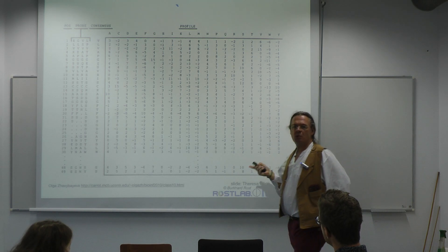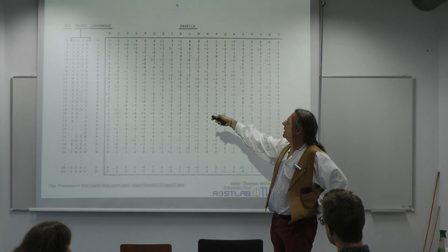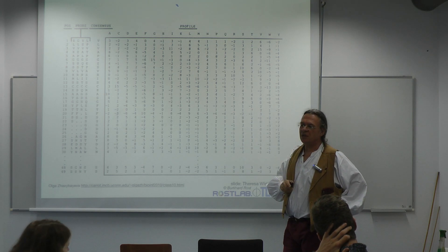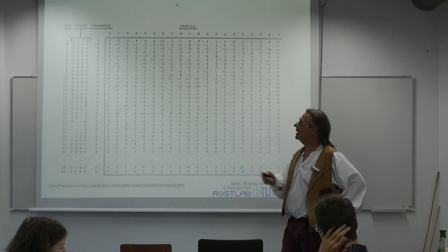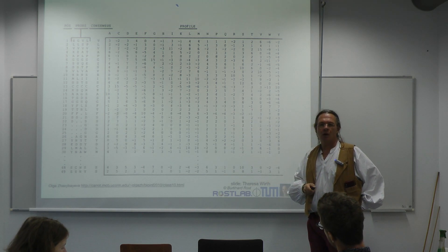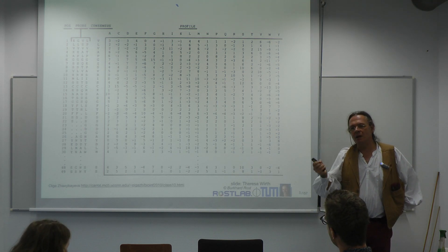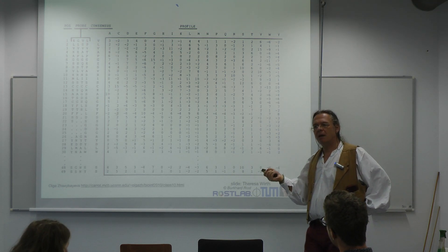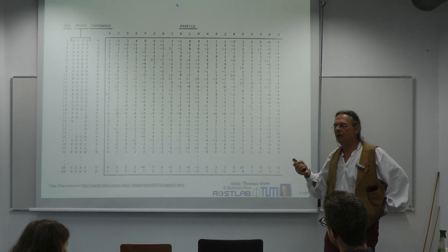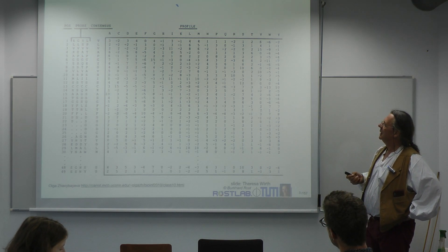Now you can write this profile in different ways. You could have a count — in a count representation you would essentially have 25% or 0.25 for each of the four that you observe. The probability then normalizes this count by what you expect from a random or background model, whatever your model for background is at that very point.